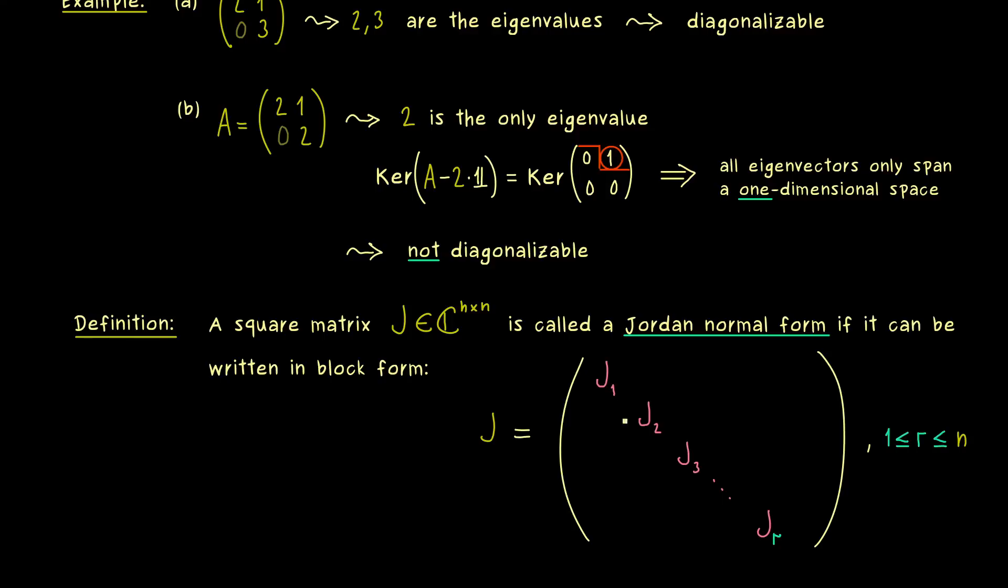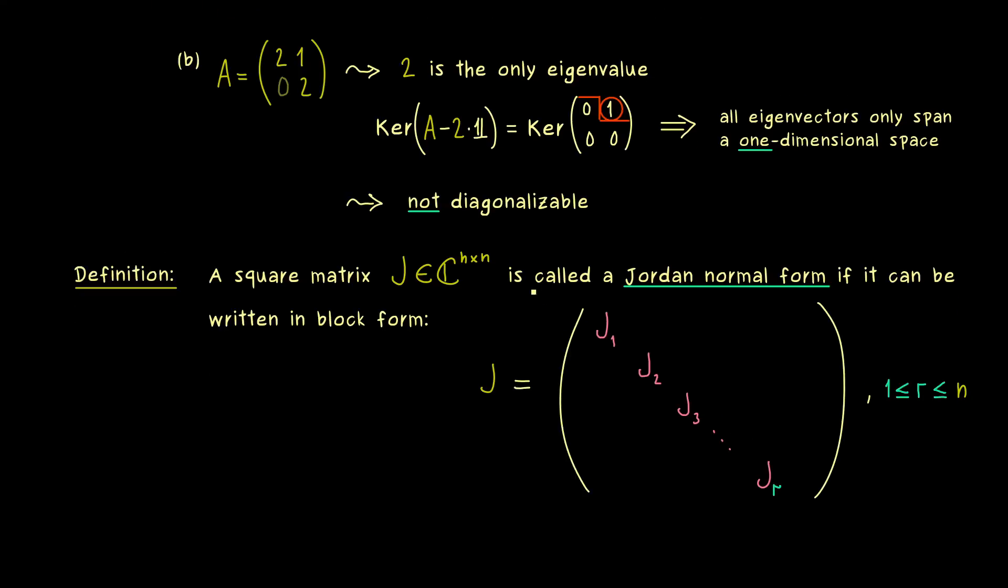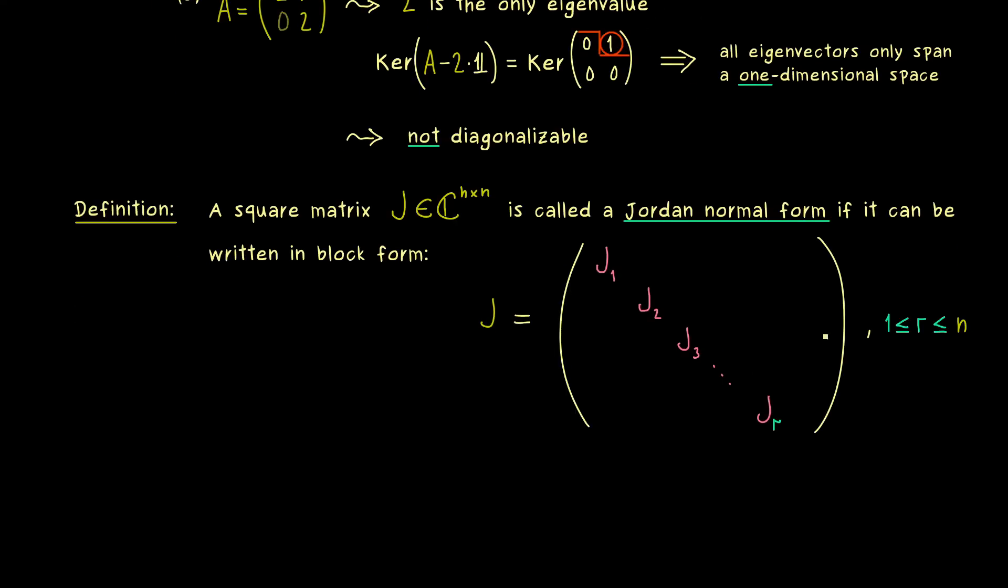Now obviously the sizes of these blocks could be different, but in total they should fill up the whole n times n matrix J. And moreover these square matrices Ji are called Jordan blocks.